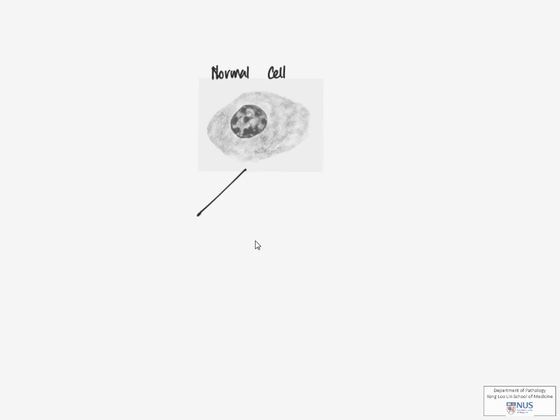So, starting off with a normal cell, cells can be subject to certain physiologic stresses, for example, variations in hormone levels, or sometimes even mild pathologic stimuli, for example, hypoxia.